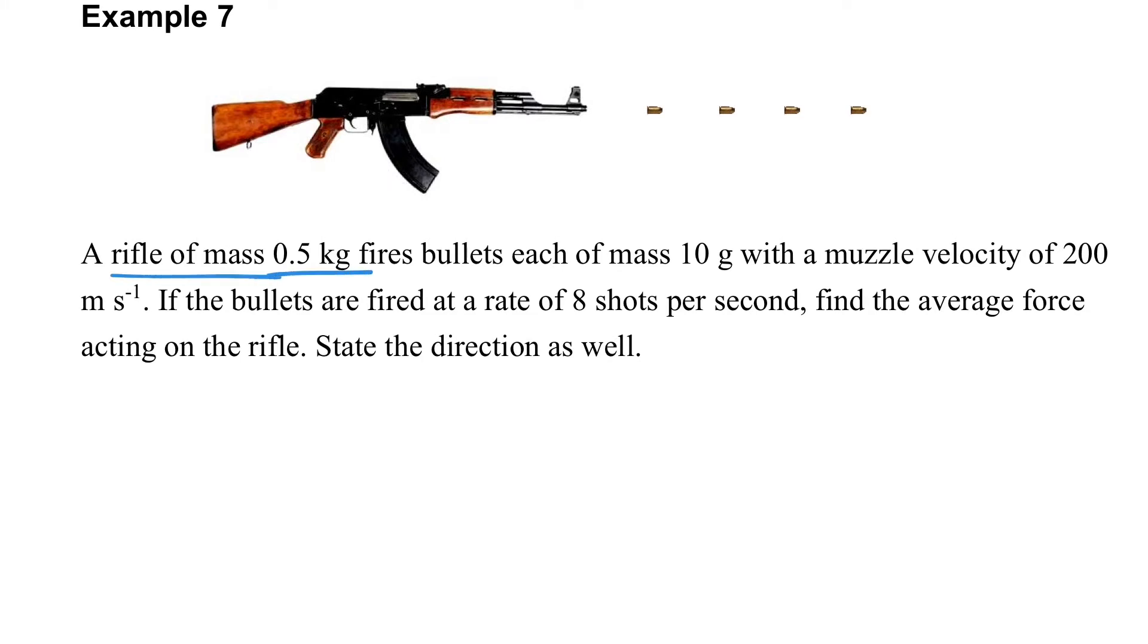Let's consider this example. We have a rifle of a certain mass with the bullet coming out 8 shots per second. So let's find the average force acting on the rifle. The average force on the rifle should be on the left. And because this force comes from the bullet, there are an action and reaction pair. So we can focus on the bullet in order to find this.